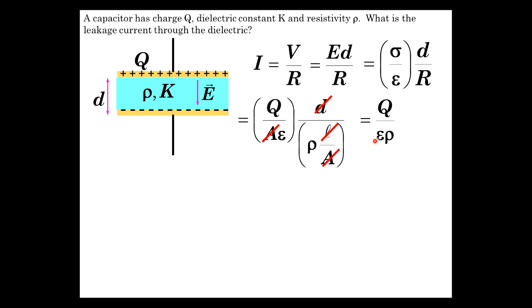But epsilon is related to the dielectric constant with epsilon zero. So we have our answer. Current is Q over K epsilon zero rho.